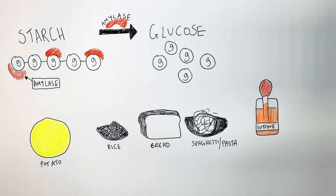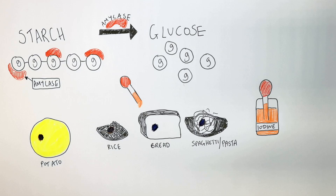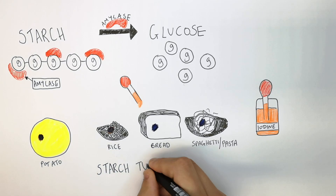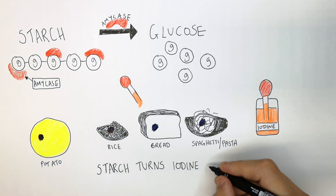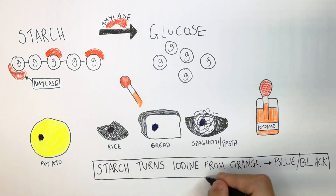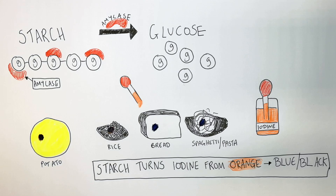The test for starch is iodine. Iodine is an orange liquid that turns blue-black when placed on starch. Remember: starch turns iodine from orange to a blue-black color.